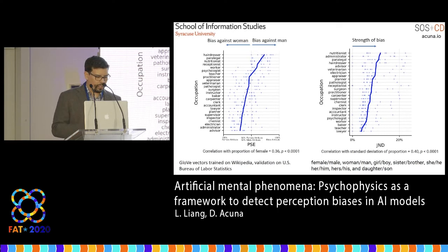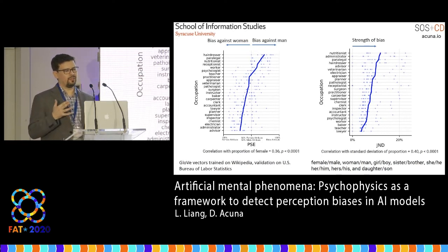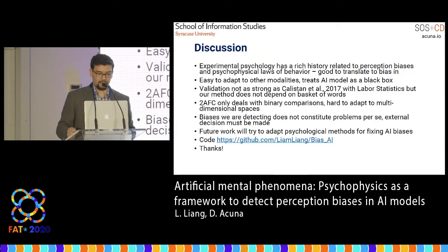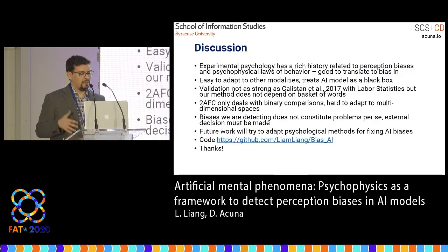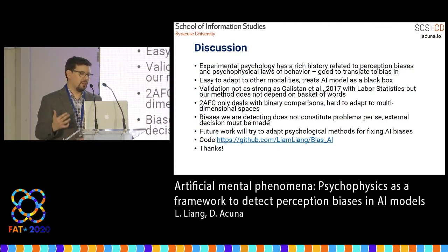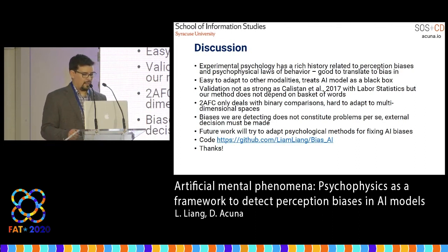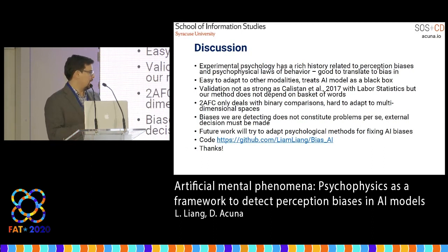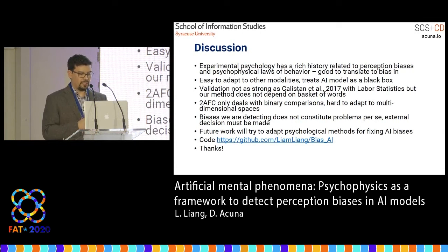This is a very exciting community. I have a background in computer science and also ecology, but a lot of what we're trying to measure around bias could benefit from borrowing the rich language and history from experimental psychology. We hope to expand these ideas in the future to not just detect biases but fix them. Please visit the GitHub repo where all the code to reproduce the results can be found. Thank you very much.